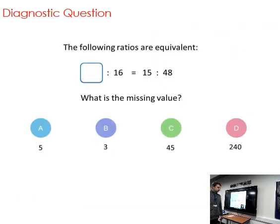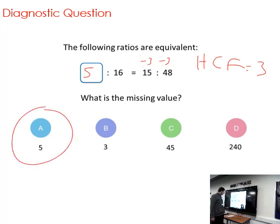Pause the video and have a go of this question here. We're trying to find the missing value, so we need to look at the highest common factor of fifteen and forty-eight. The highest common factor is three, so divide everything by three. Forty-eight divided by three gives us sixteen, fifteen divided by three will give us five. So a is the answer.